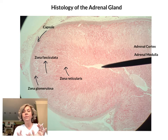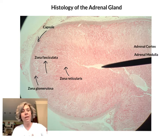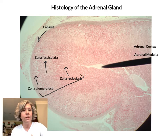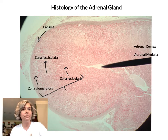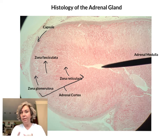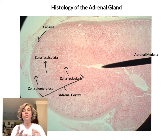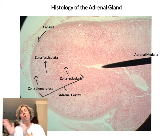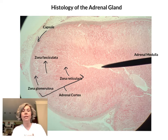These three zones collectively form what's called the adrenal cortex. From the glomerulosa into the zona reticularis, all three zones together comprise the adrenal cortex: zona glomerulosa for aldosterone, zona fasciculata for cortisol and cortisone, and zona reticularis for the androgen DHEA.